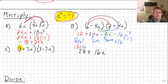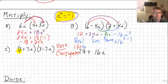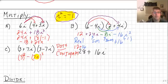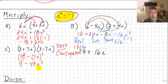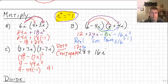Now let's look at problem c: 3 plus 7i times 3 minus 7i. You might recognize this — it's our difference of two squares pattern; these are conjugates. So it follows a squared minus b squared: 3 squared minus 7i quantity squared, which is 9 minus 49i squared. Since i squared is negative 1, that becomes 9 minus 49 times negative 1, which is 9 plus 49, which is 58.